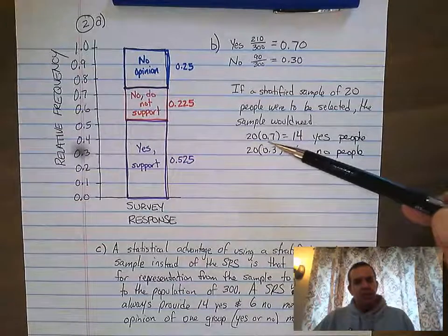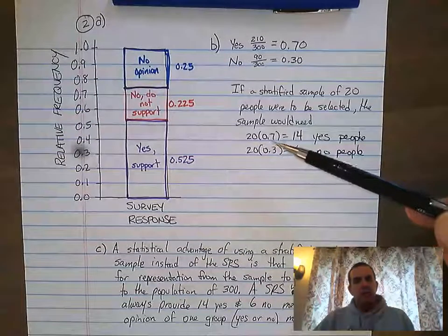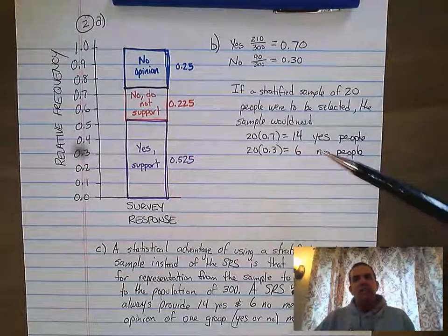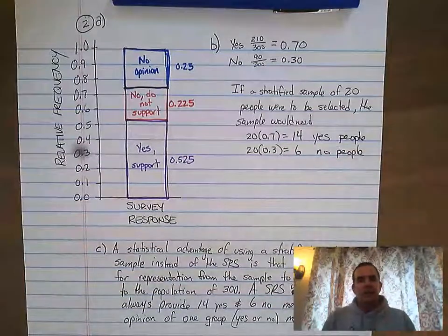The big part about this is you needed to show this calculation. You needed to show the 20 times 0.7 to get to 14 and identify that those are your yes people.